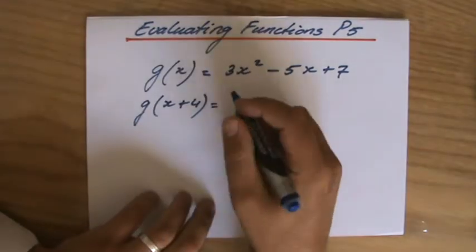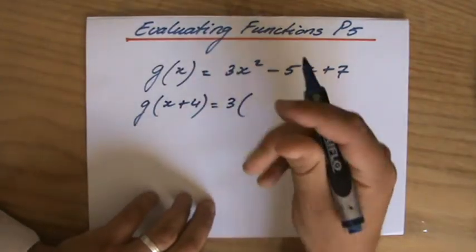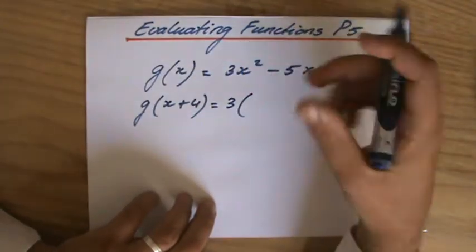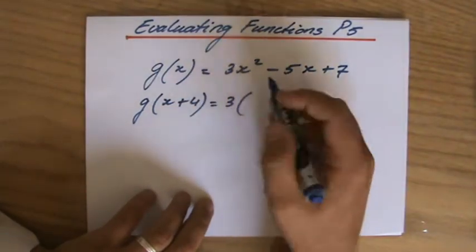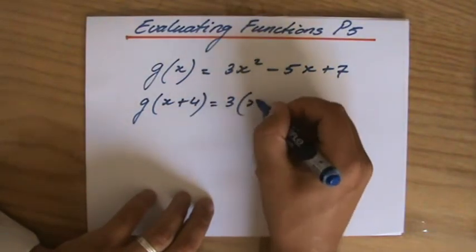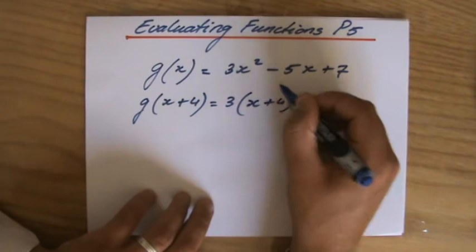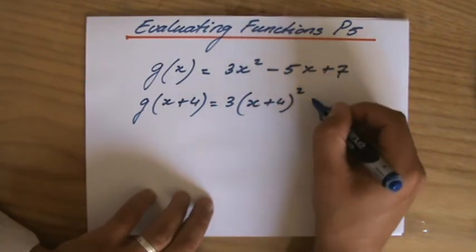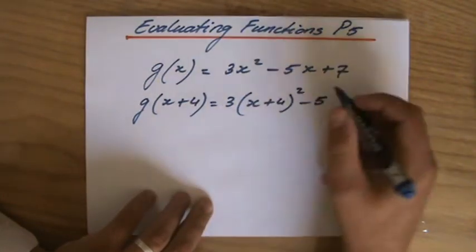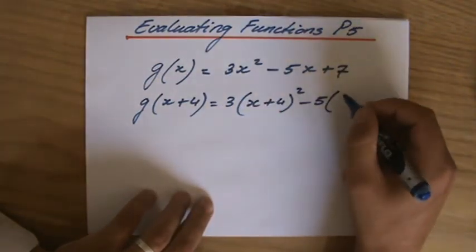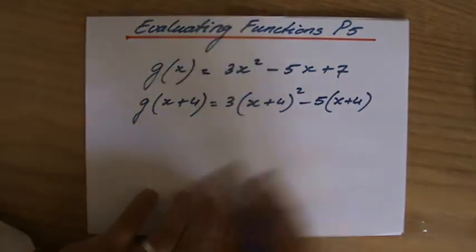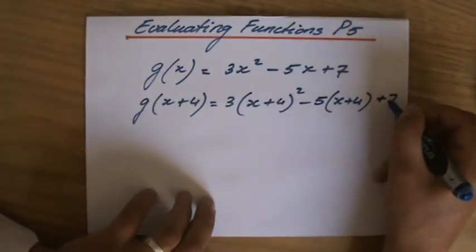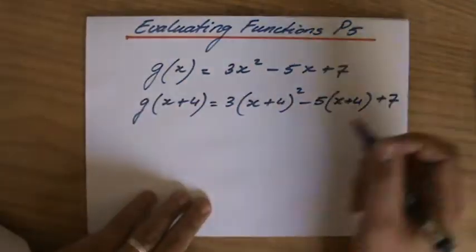Now let's do that. I've shown you in the previous video what that exactly means. So rather than x here, I write down x plus 4 squared minus 5 times x plus 4. Let's leave that in brackets now. Do not expand that already — write down this step.